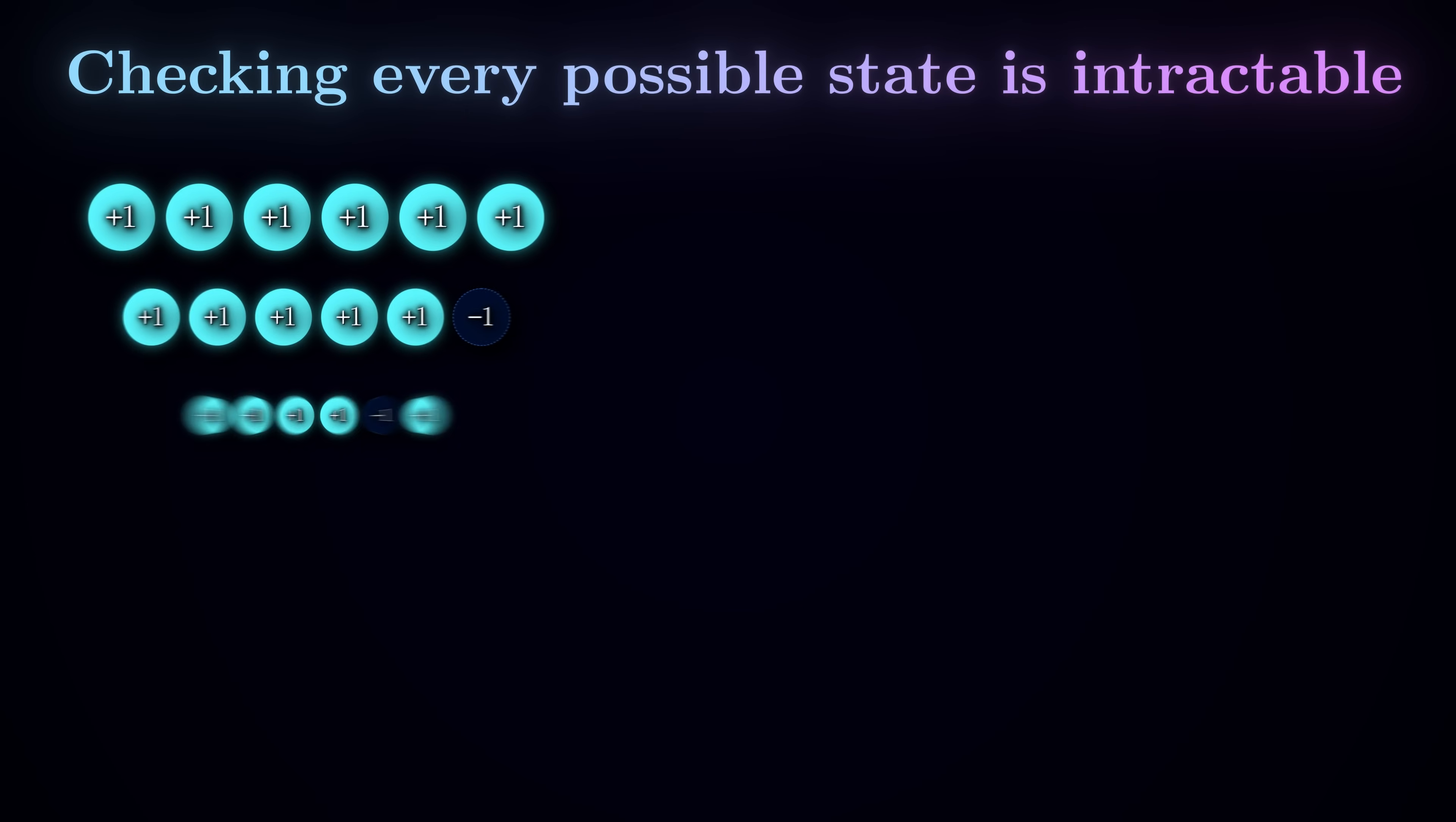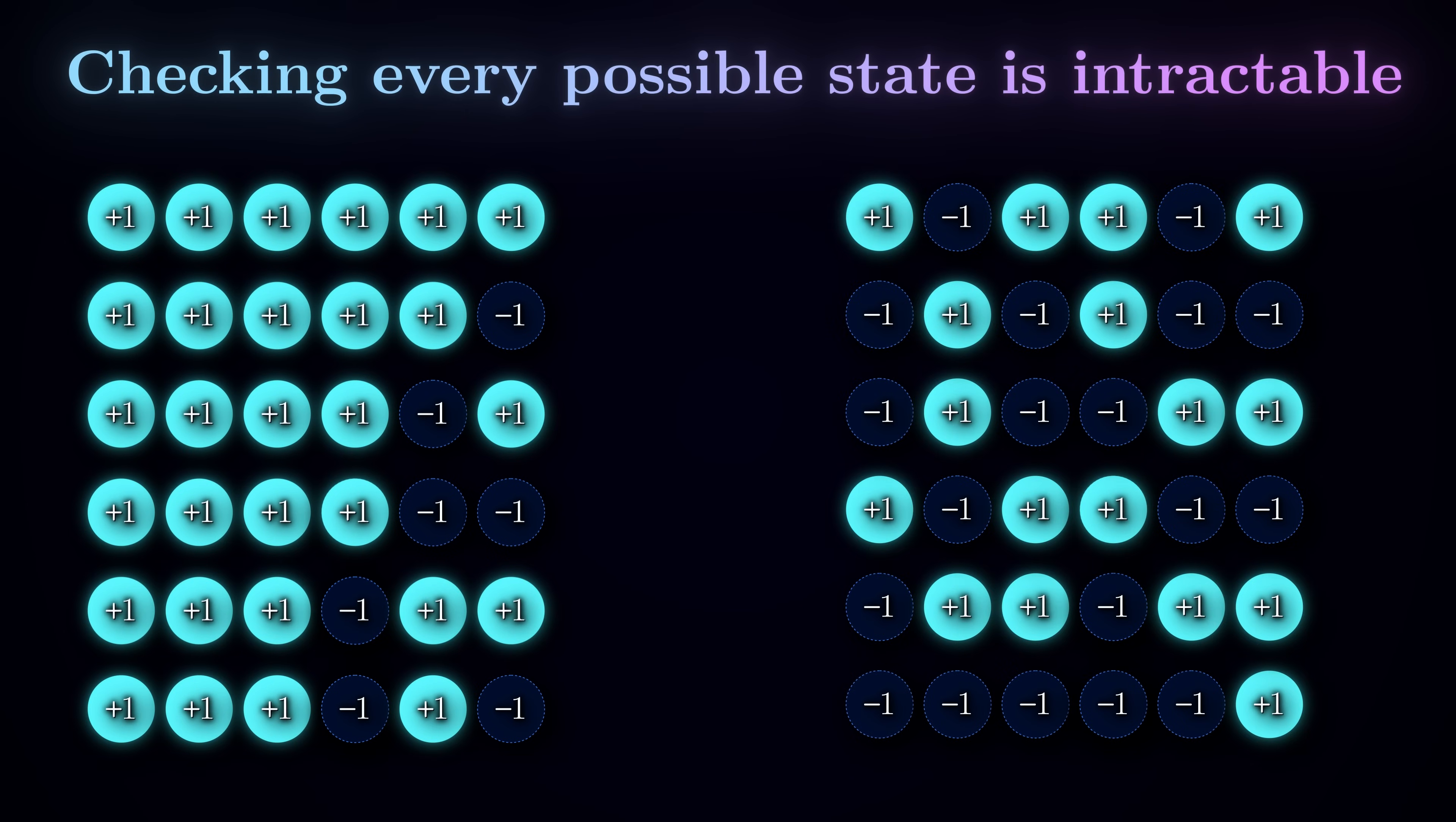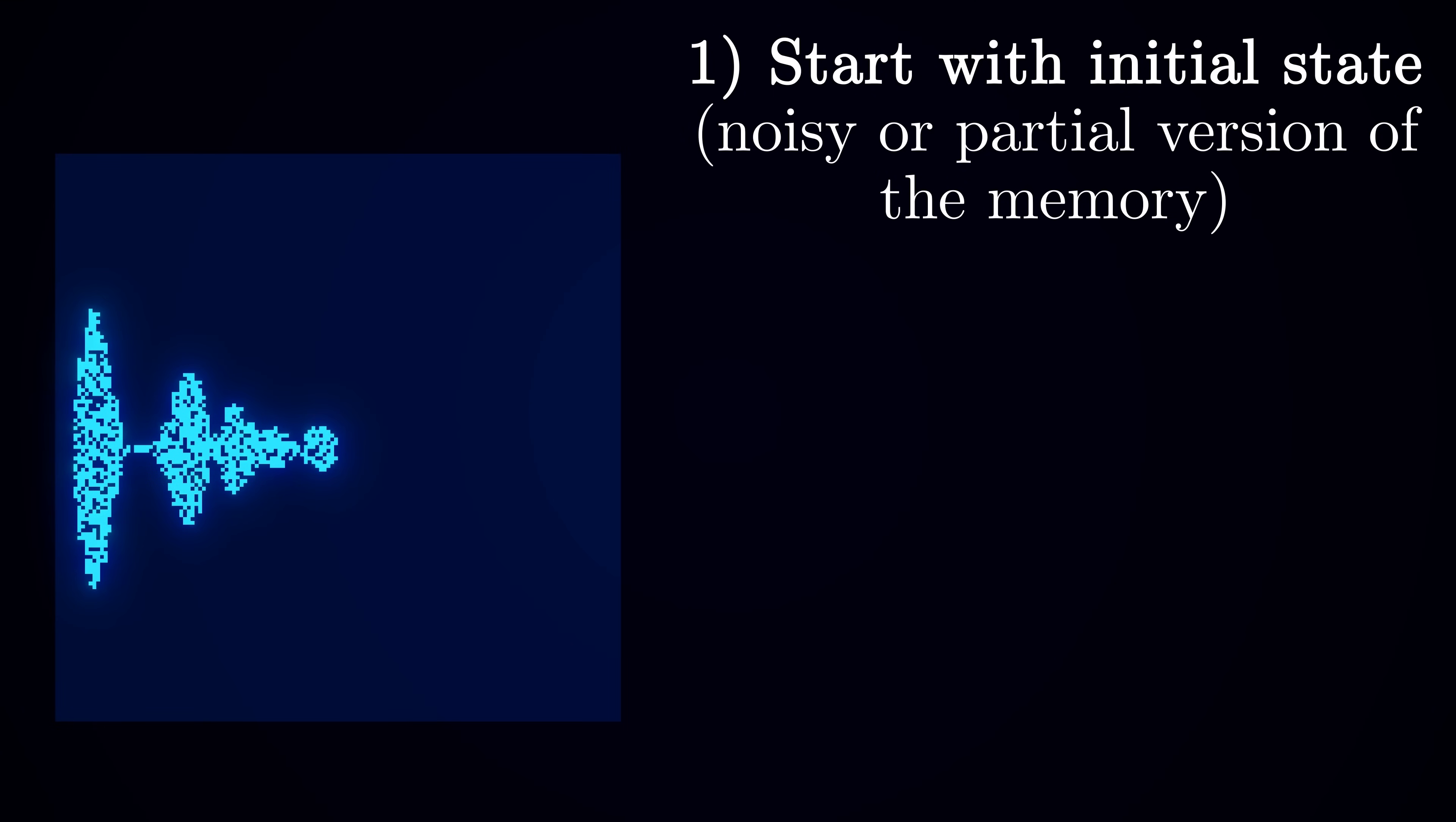As we discussed, simply checking all possible states is not an option. So we will start with some initial state, which could be either a partial or a noisy version of one of the memories, or a random configuration altogether.